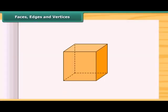Look at this cube. This is the face of a cube. This is the edge of the cube and this is the vertex of the cube. An edge is a line segment where the faces meet and the vertices are the points where the edges meet.